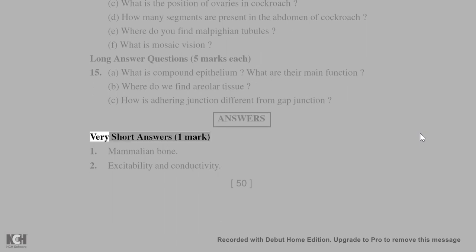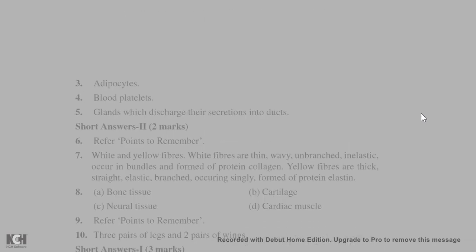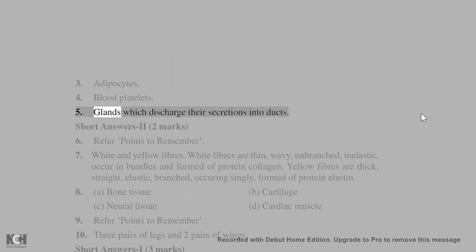Answers — Very short answers, 1 mark: 1. Mammalian bone. 2. Excitability and conductivity. 3. Adipocytes. 4. Blood platelets. 5. Glands which discharge their secretions into ducts.